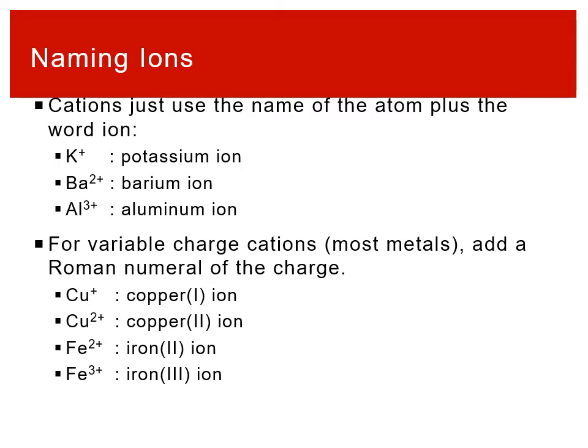First we'll talk about cations because they're more simple. For the most part, you just take the name of the atom. So K+, that would be potassium with a plus one charge — we just call it potassium ion. Because potassium is a metal based on its location in the periodic table, when you say potassium ion, you're inherently implying that it's a cation. You're communicating that information.